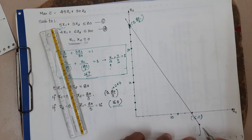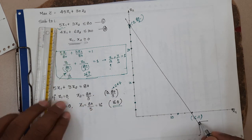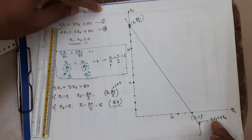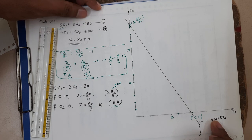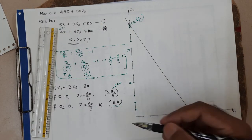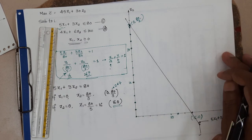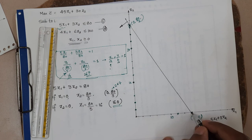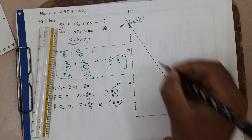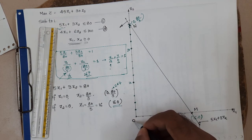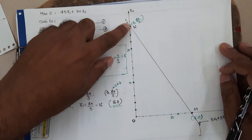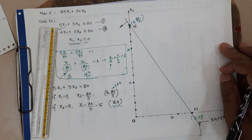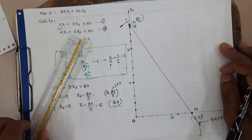This line represents 5x1 + 3x2 = 80. Since the constraint is less-than-or-equal-to type, the feasible region will be towards the origin — meaning this side (containing the origin) is our feasible region. Let us call the intercept points M (16, 0) and N (0, 26.7), with O at the origin. The region O-M-N is our feasible region for constraint 1 alone.